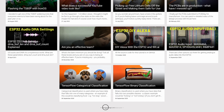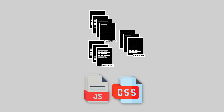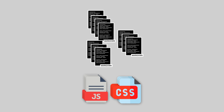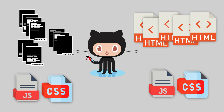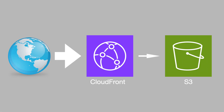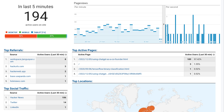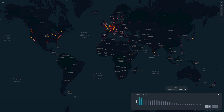The site is all built using a tool called Jekyll. This takes a bunch of Markdown files and compiles them into a set of static HTML pages. All this is hosted on AWS using an S3 bucket behind CloudFront. The nice thing about this is there's no backend, so when a lot of traffic hits the site, it doesn't really cost me anything.